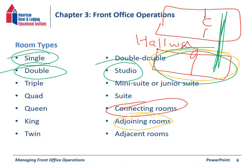Triple means three people per room and quad means four people per room. King means a hotel room with a king-size bed. Queen is a room with a queen-size bed.